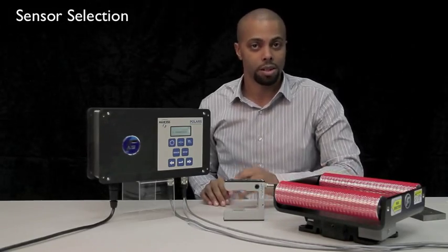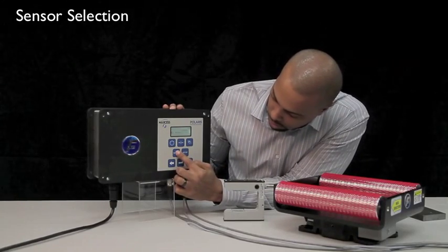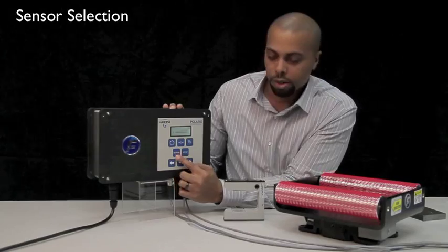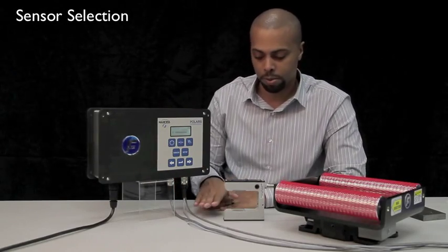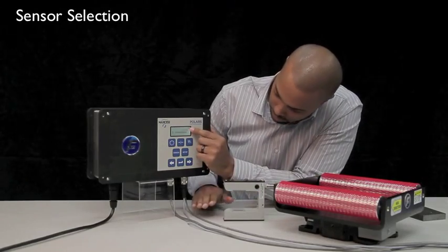To select the correct sensor, press your sensor button repeatedly until the correct sensor is displayed. You can verify you have the correct sensor selected by moving a piece of material in and out of your sensor and monitoring the bar graph on the display.